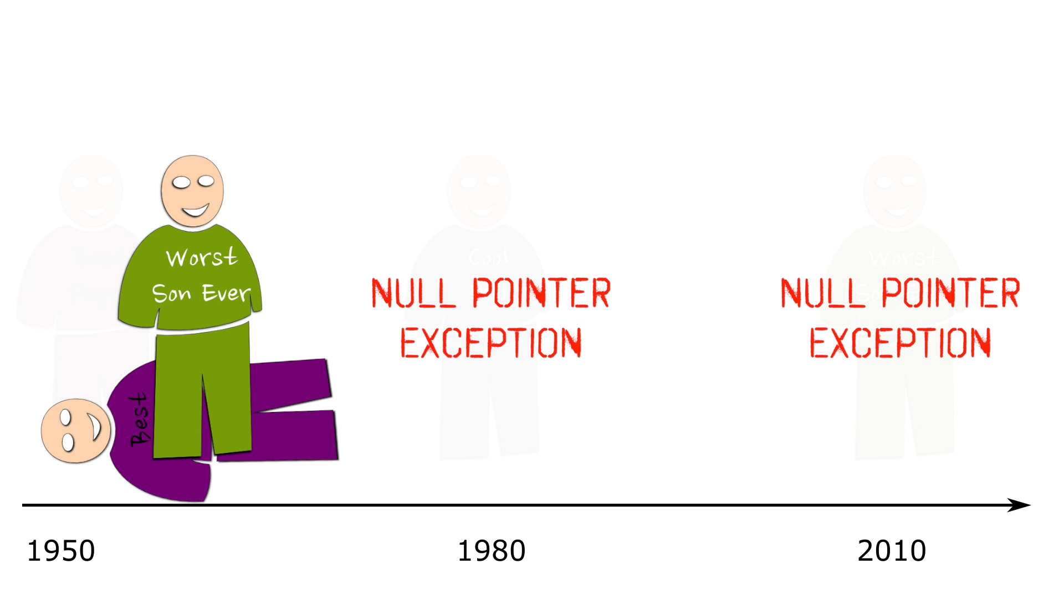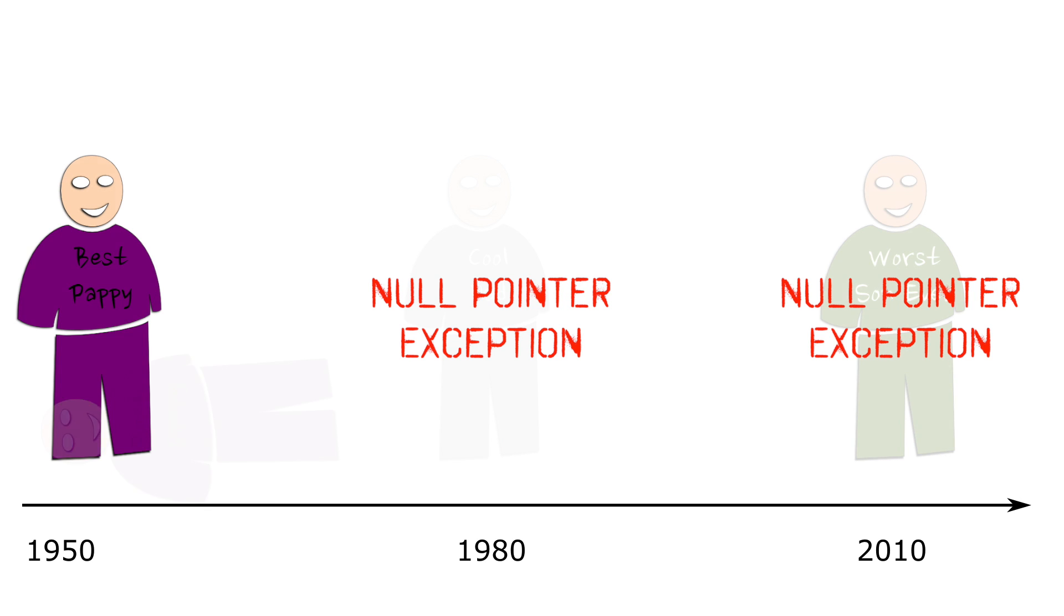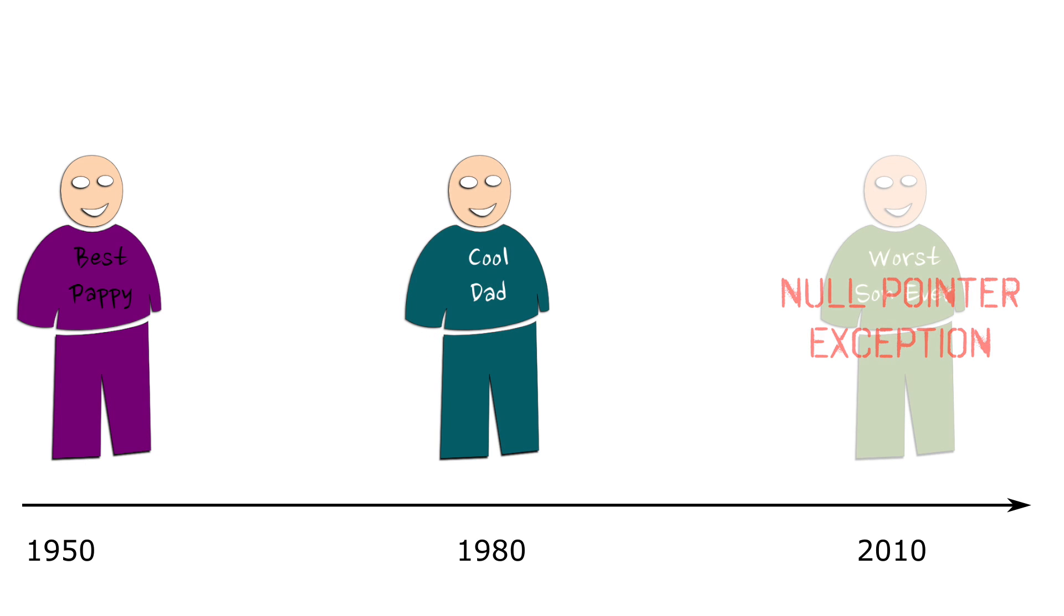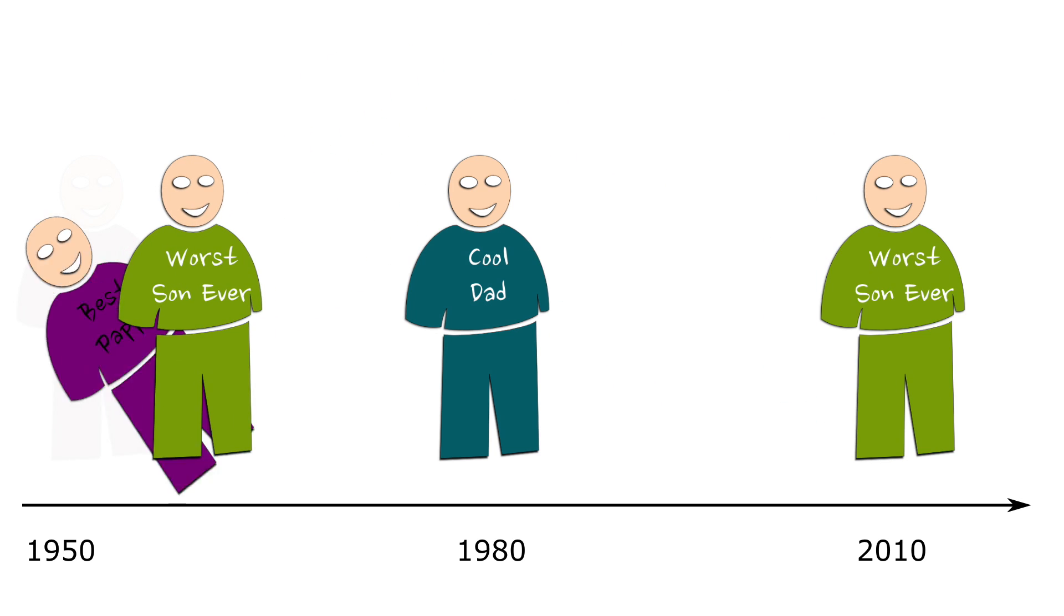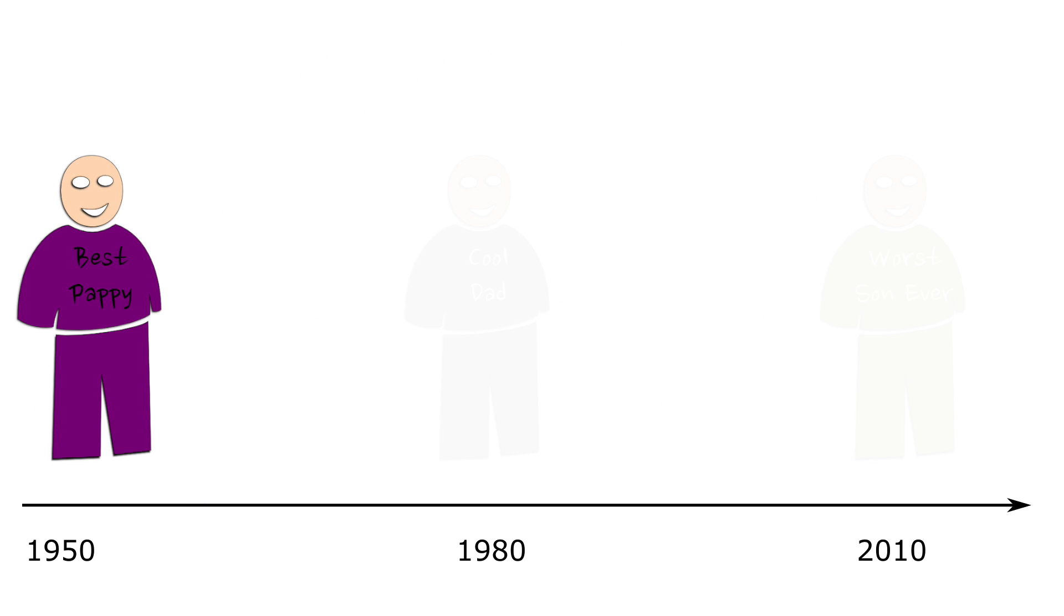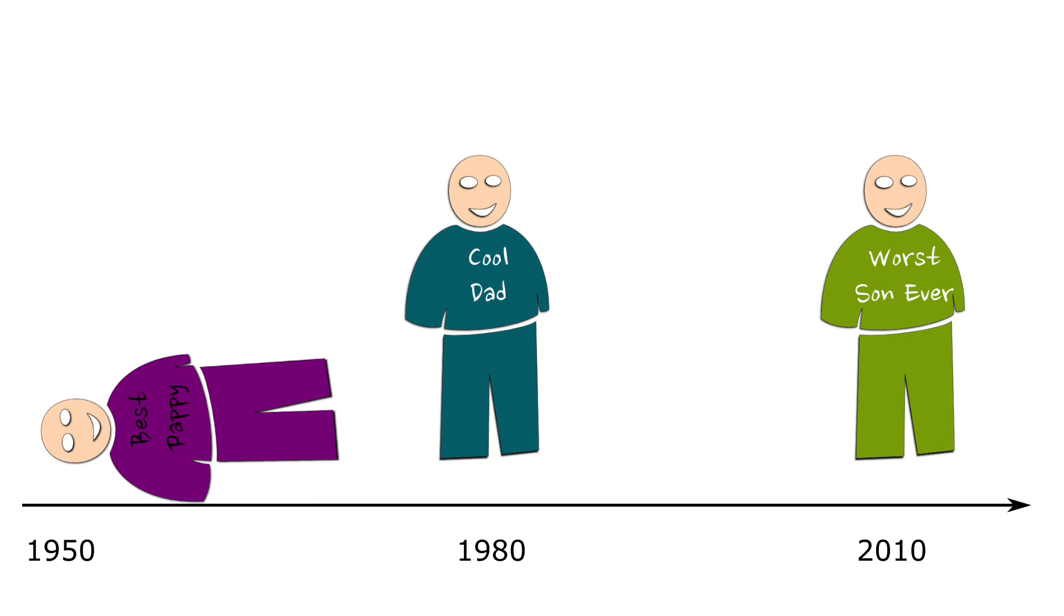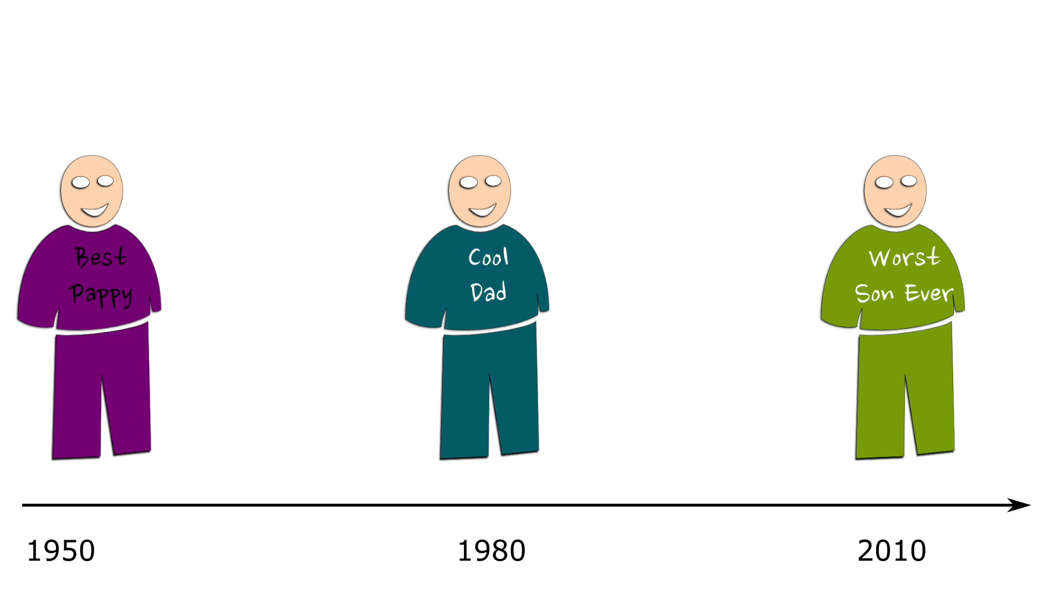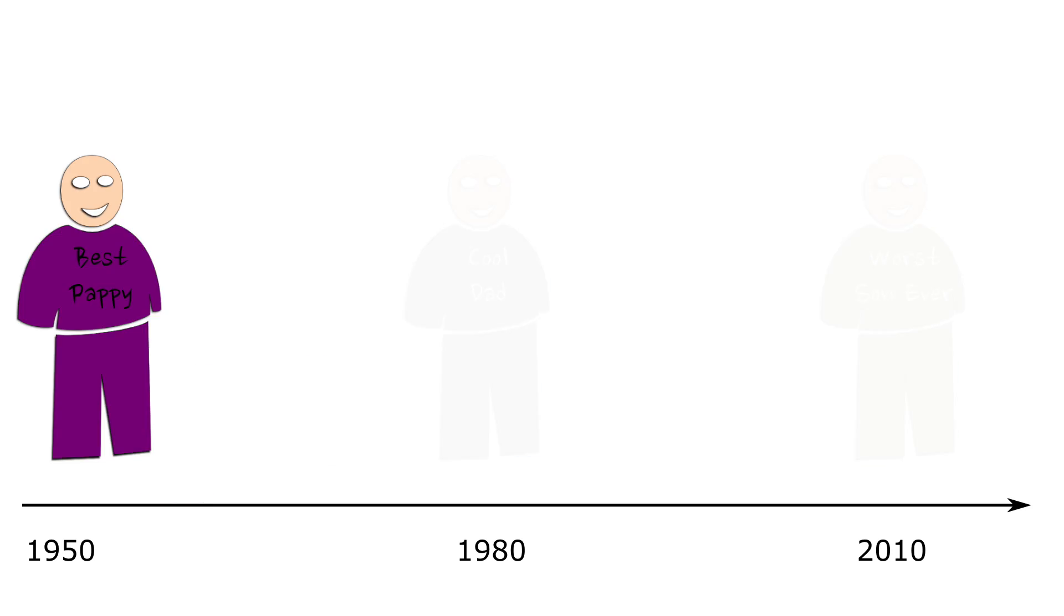But then you too wouldn't have been born, and you wouldn't have come back in time to disturb your grandfather, and your grandfather would have fathered your father. And then you would have been born, but you would have accidentally killed your grandfather, and you wouldn't have been born. This makes no sense. You can't both be born and not have been born.